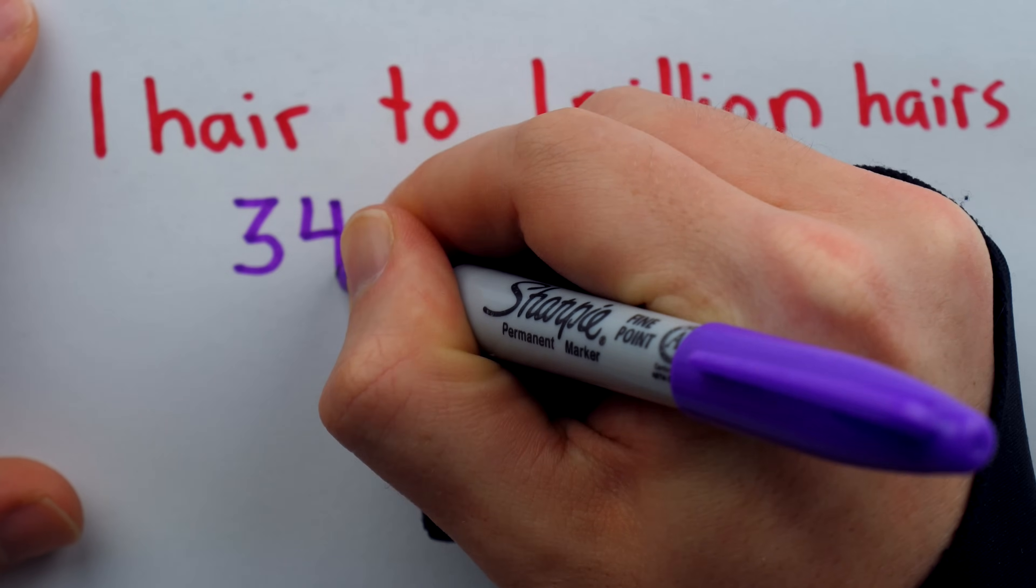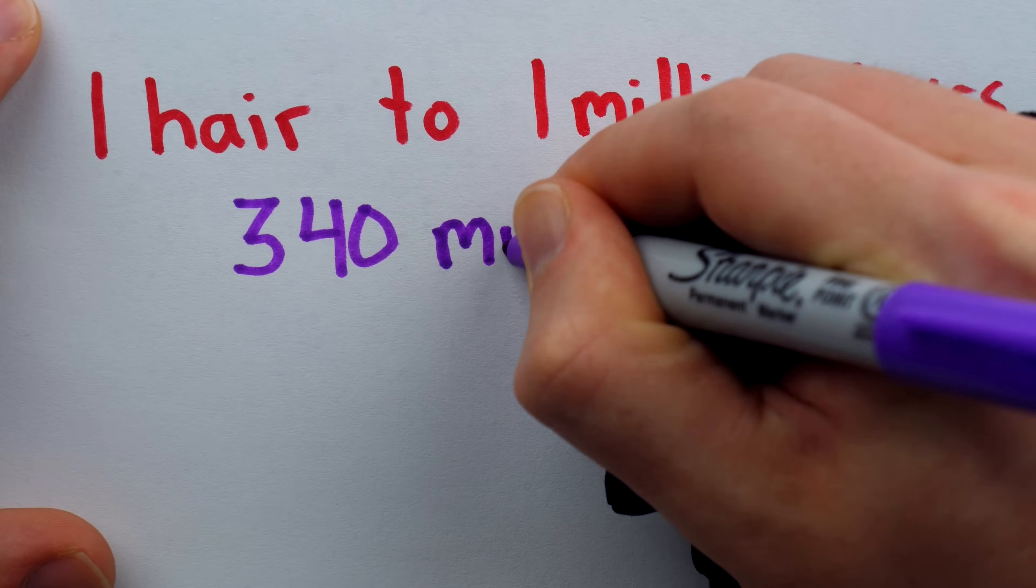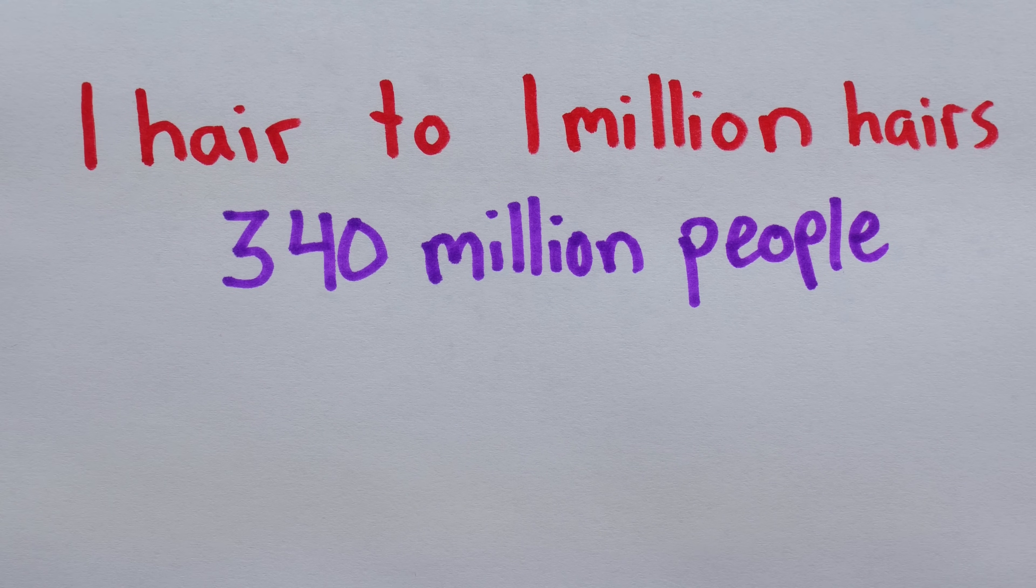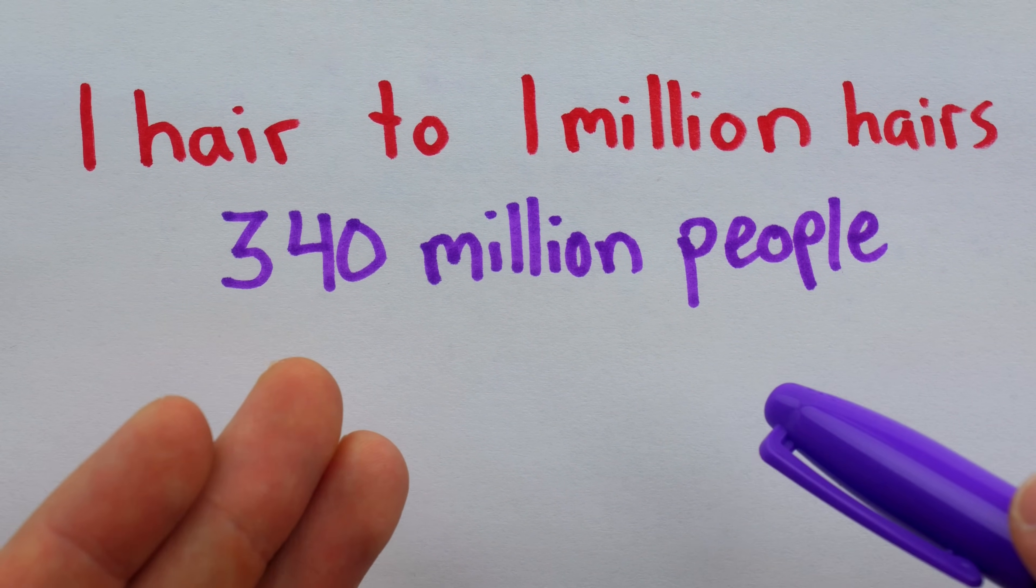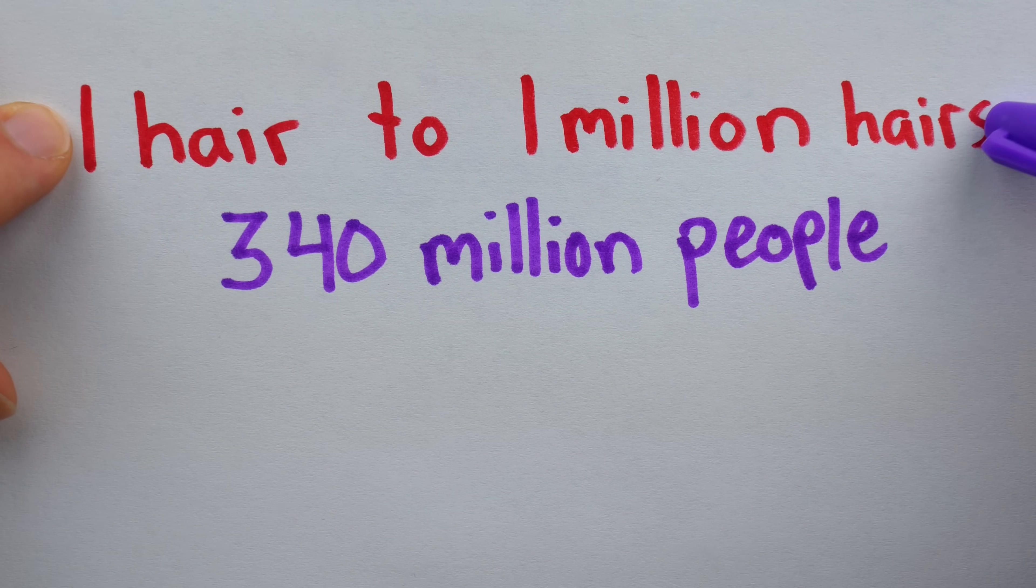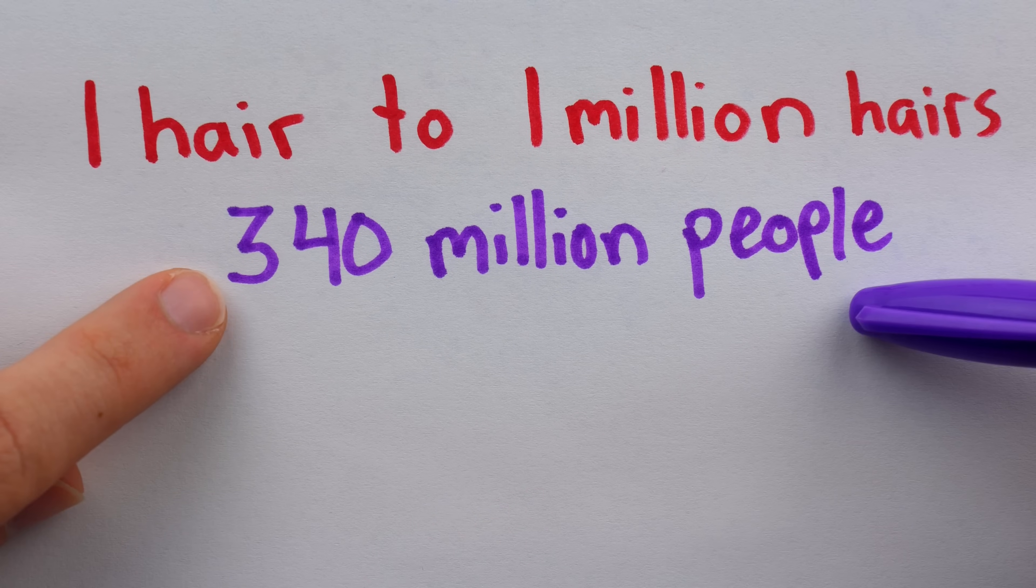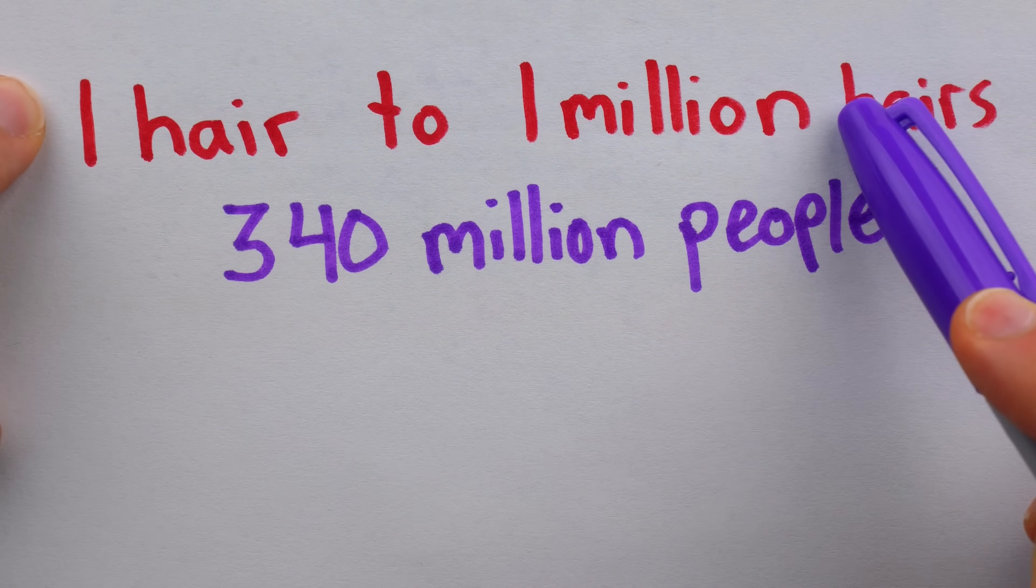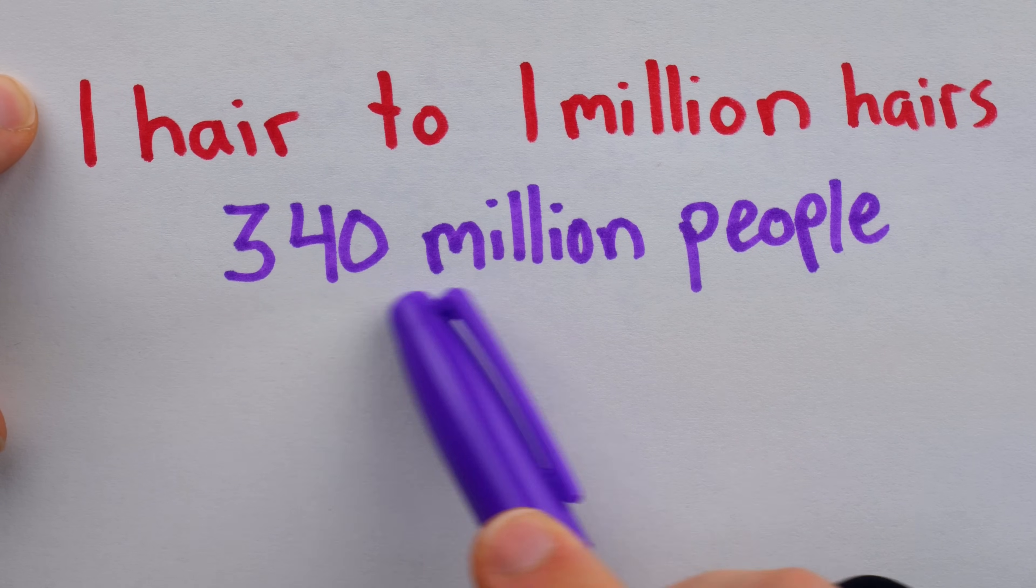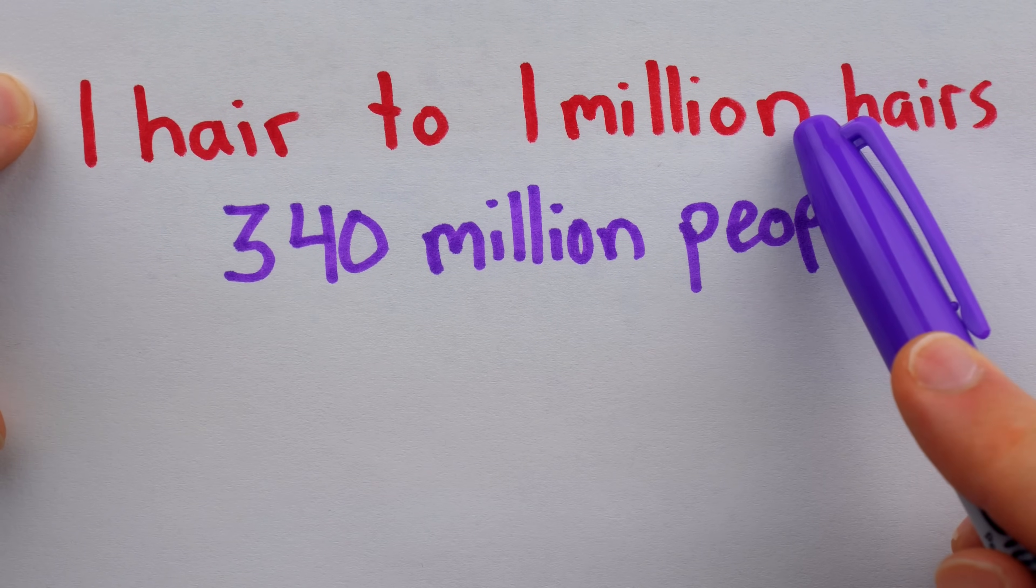There are only one million different possible number of hairs someone could have, but there are about 340 million people in the USA. So yes, there must be lots of them with the same number of hairs on their head, because there are only one million different possibilities, but over 340 million different people.